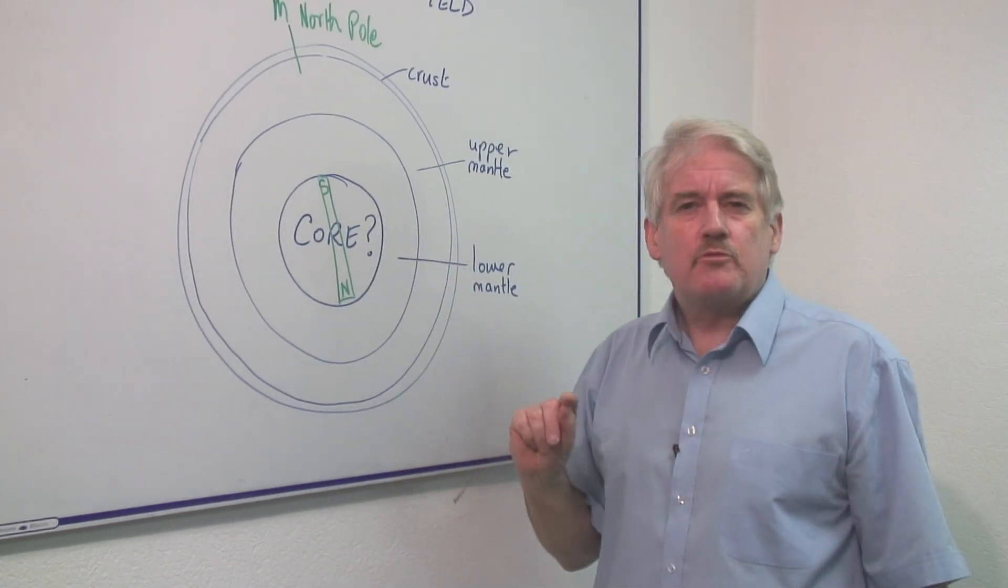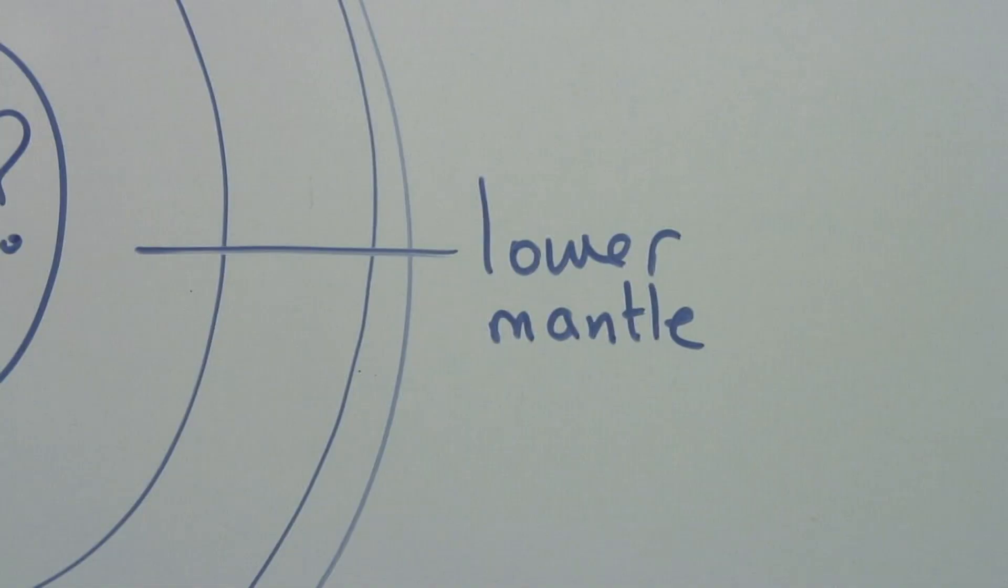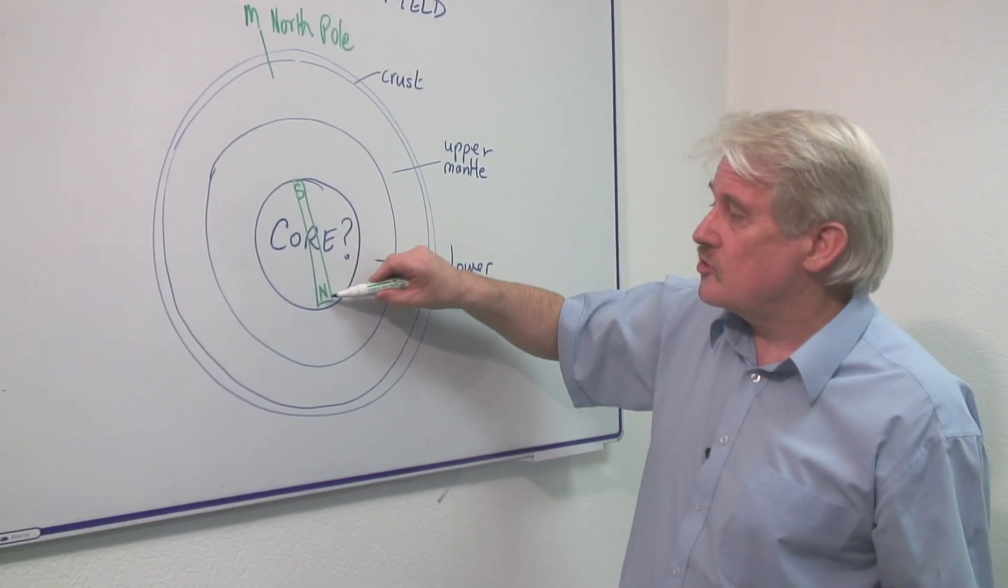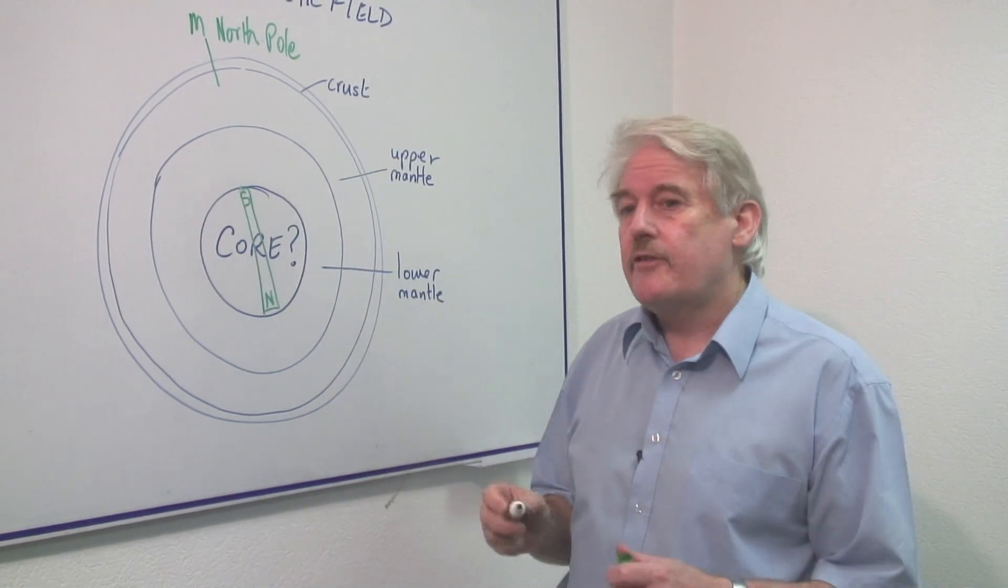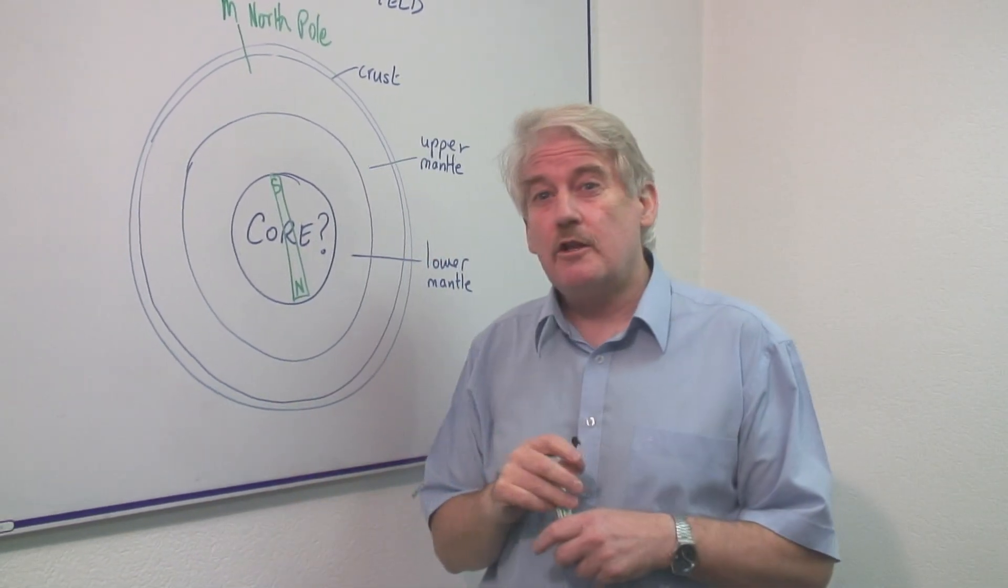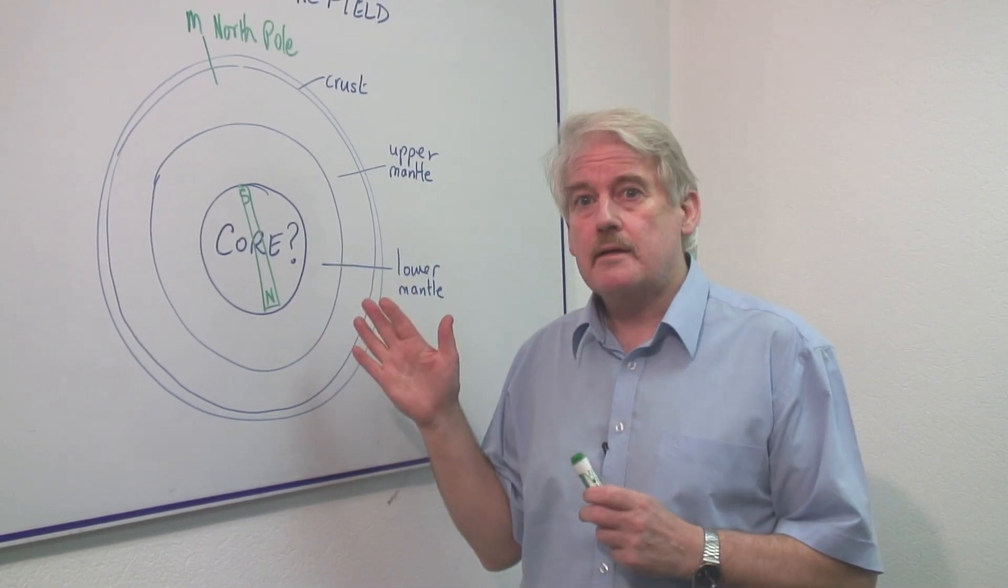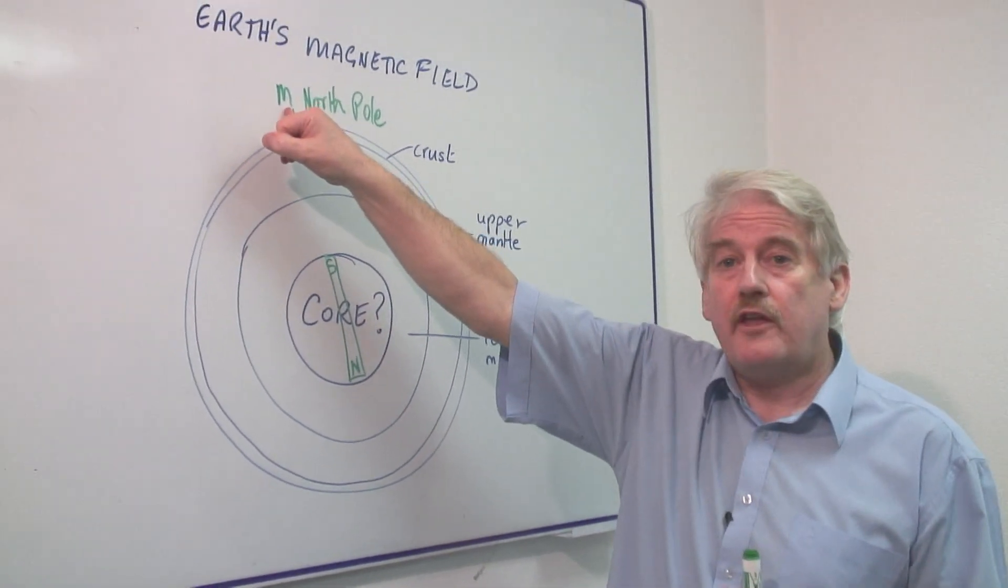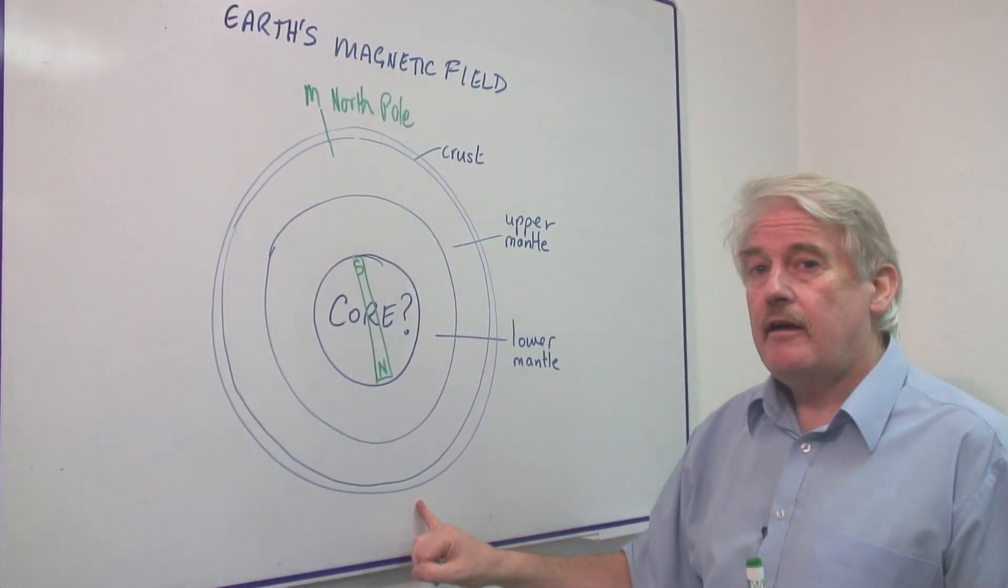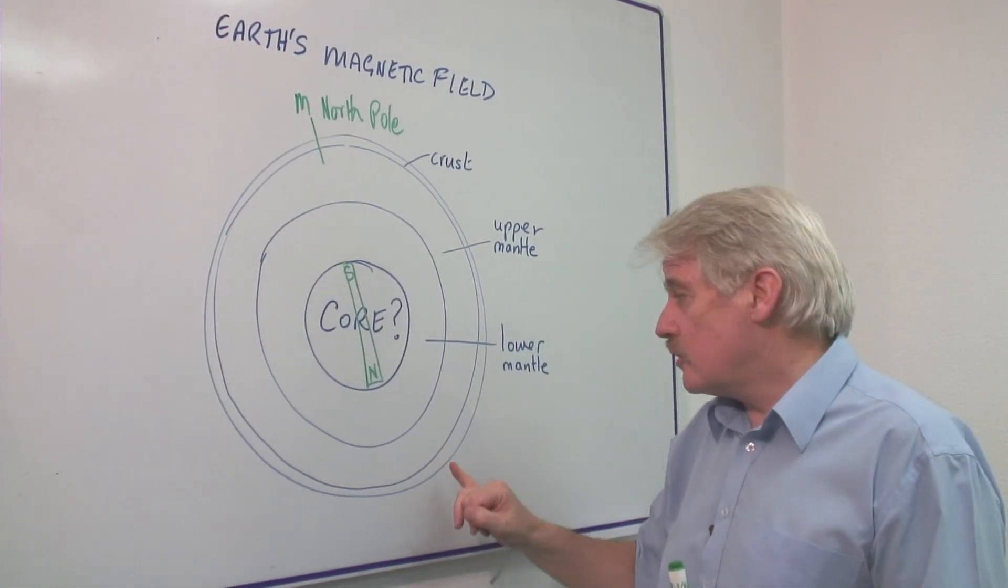When this experiment was tried in a laboratory, they found that there were sudden changes so that this could suddenly change from North to South this way to North to South the other way. So the experiment in the laboratory actually explained why in the past, the Earth's magnetic field has not always been North here and South there. In fact, it was South there and North here.